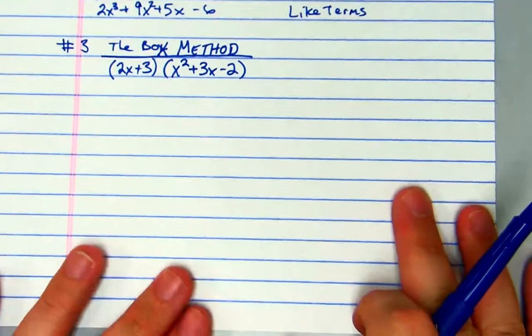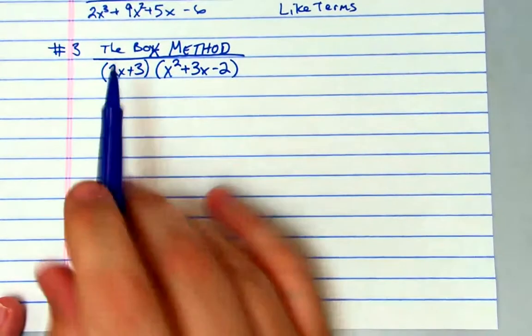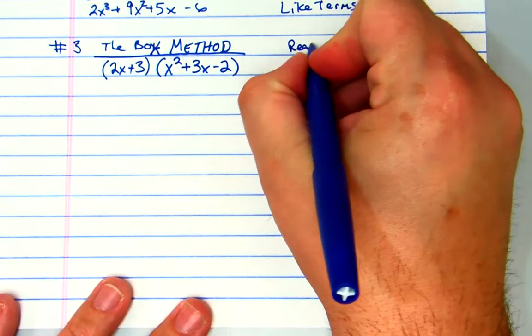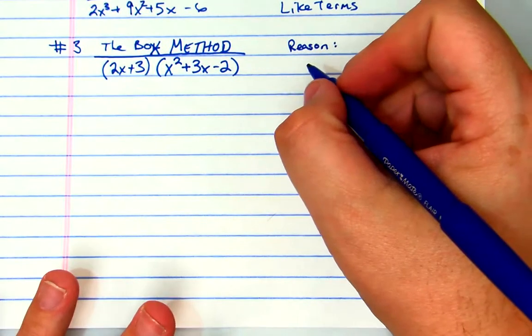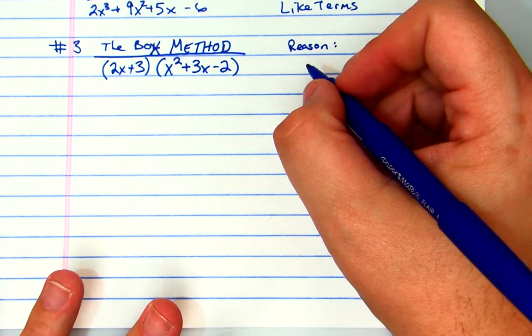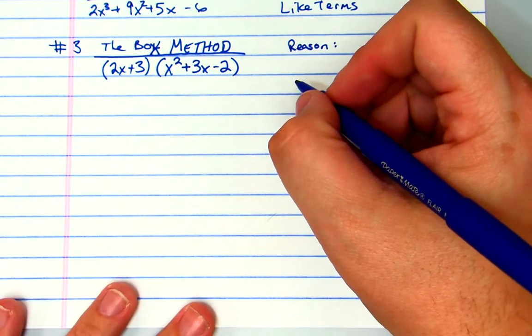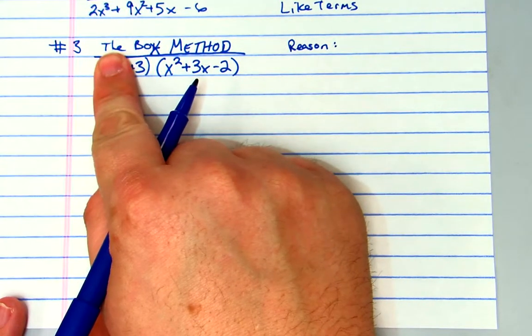First off, the reason why I love this - this is my favorite. If I had to choose one, I would choose method three, the box method, 100% of the time, except for if it's a monomial. If it's just like three times that, I just distribute it and be done with it. As soon as I get something like this, I'm using a box.